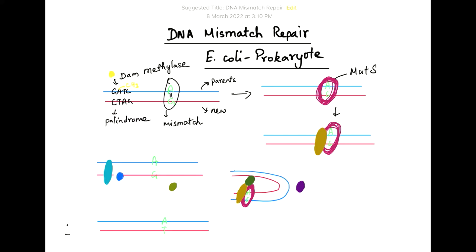This will result in bending of the DNA loop so that the GATC region is in close proximity to the mismatch region. And it will also bind at the same time a MUT-H protein.